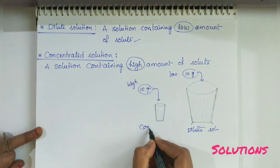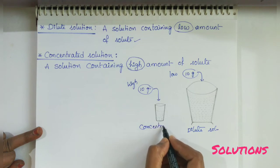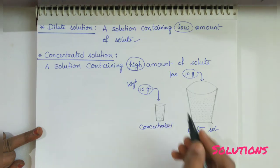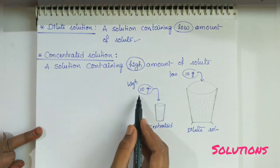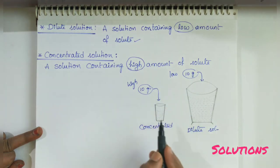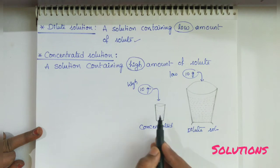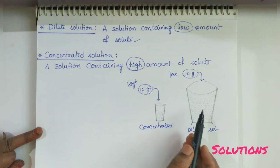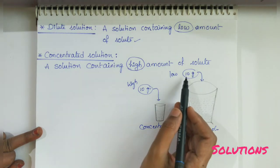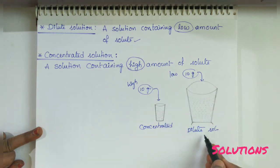When a less amount of salt is present in a large quantity of water, it is a dilute solution. When a high amount of salt is present compared to the quantity of water — for example 10 grams of salt in a glass — that is why it is called a concentrated solution.